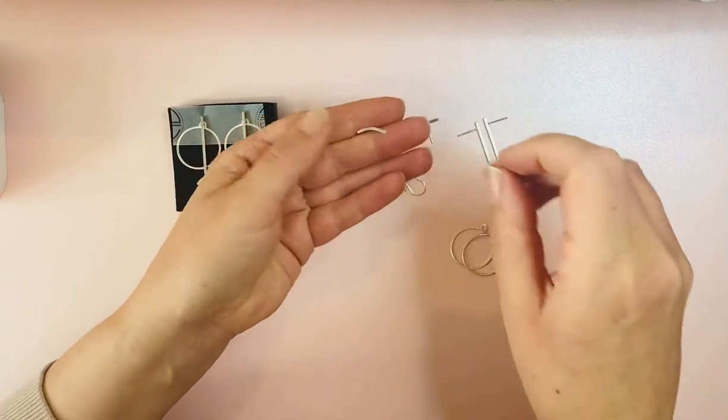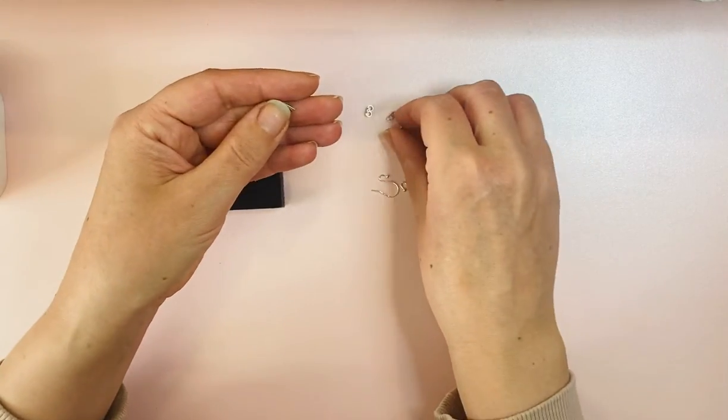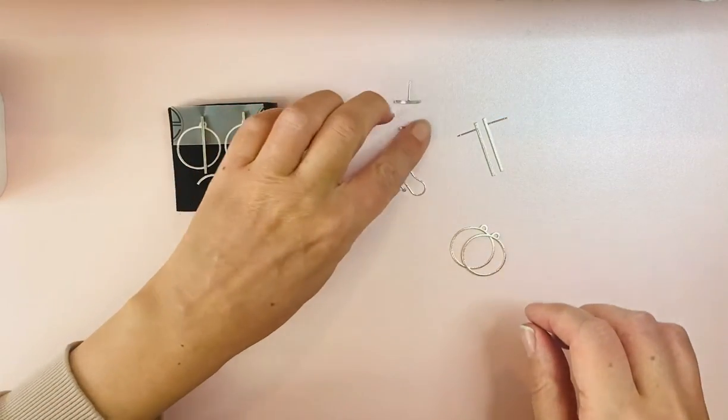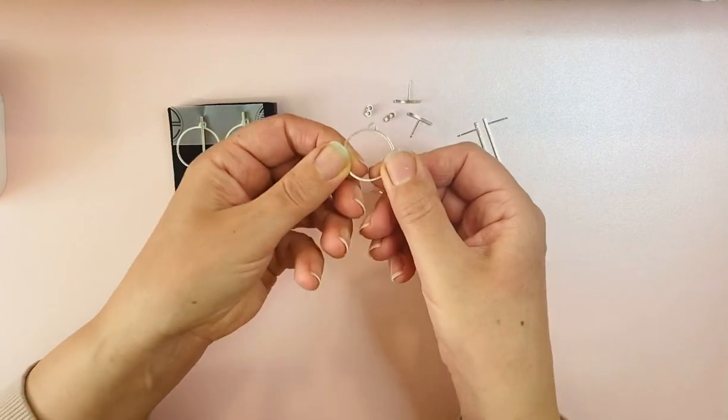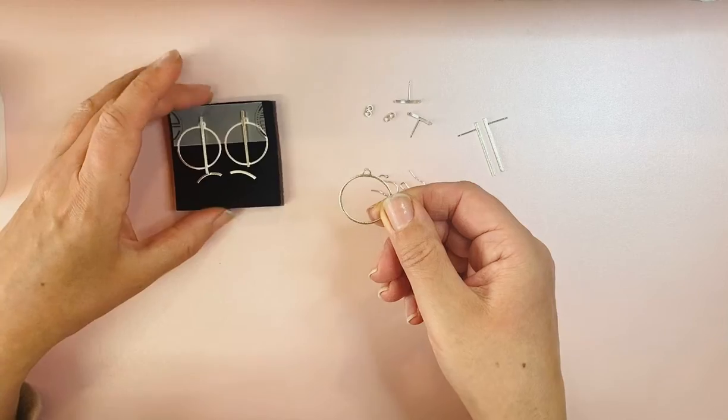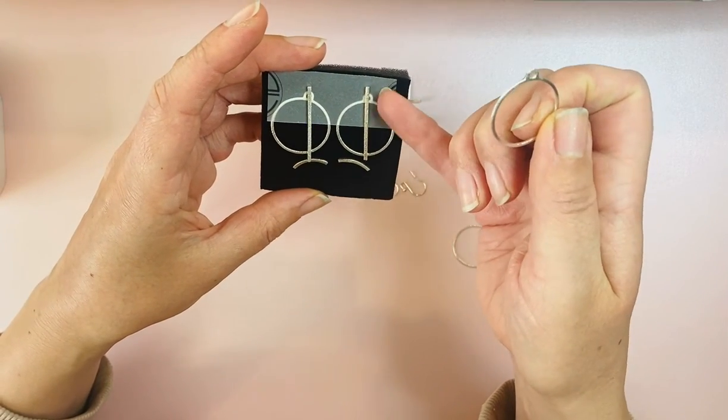The curve studs can be worn on their own as studs with stud backs. The circles can be worn behind the ear, so I've arranged them on this behind this bit of paper. Imagine this bit of paper is your ear.